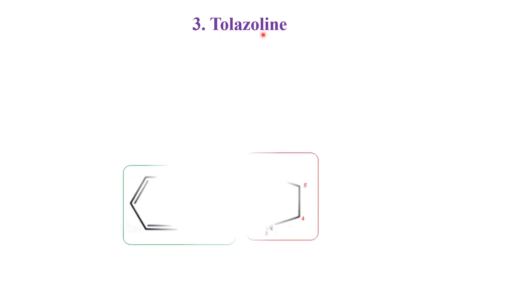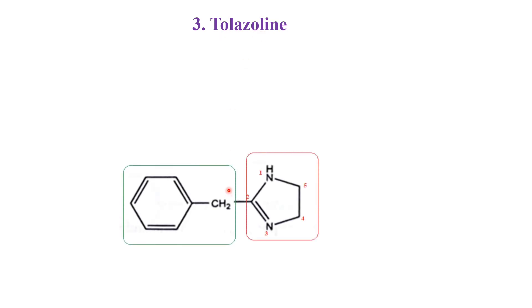We are going to see the synthesis of tolazoline. First, we will see the structure of tolazoline — it has a tolazoline nucleus that is connected with imidazolin. Otherwise, we can call it a benzyl group; that benzyl group is connected with imidazolin.